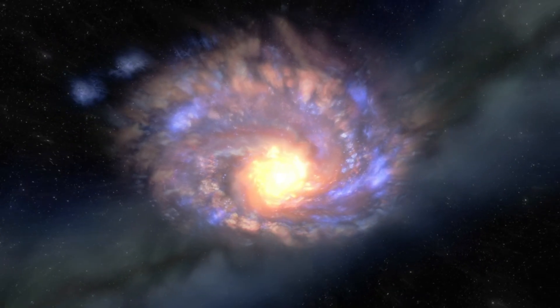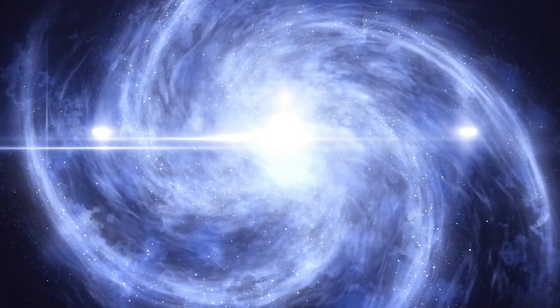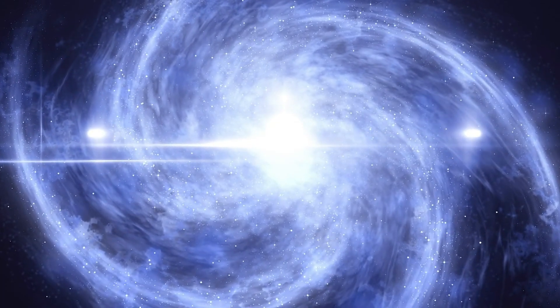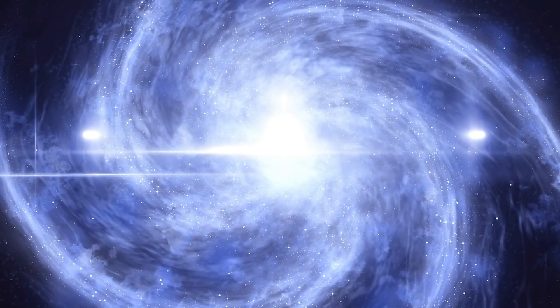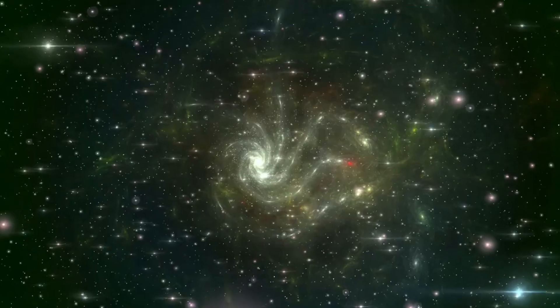However, the planet's close orbit likely results in tidal locking. This in turn leads to one side of the equator being subjected to constant intense sunlight while the other experiences absolute darkness. The situation resembles the moon's relationship with Earth in our planetary system.